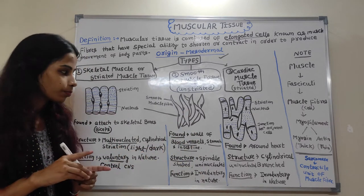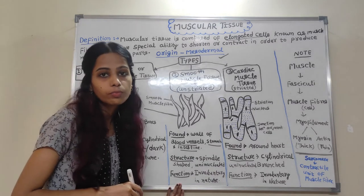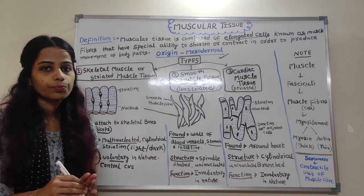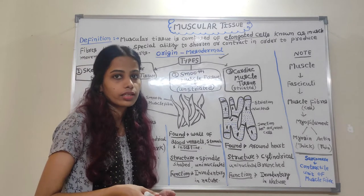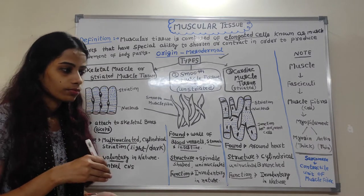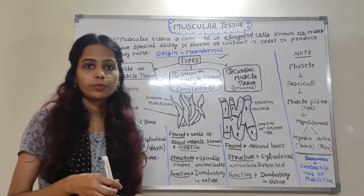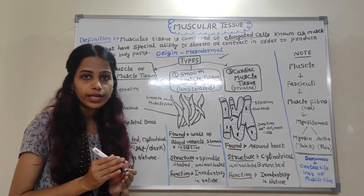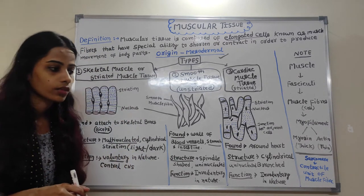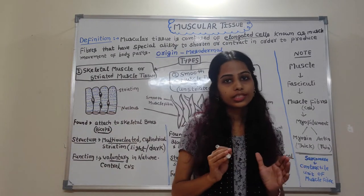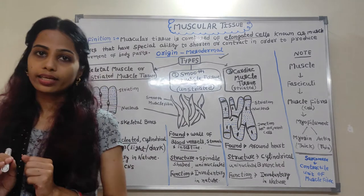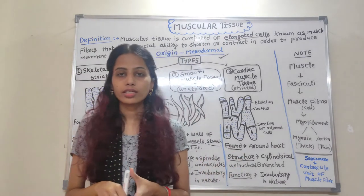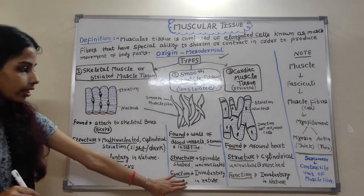The function of smooth muscle is involuntary in nature. For example, when the body eats something and food has to pass through the esophagus, contraction and relaxation movements happen — this is known as peristaltic movement. All functions of internal organs like digestion and respiration are not under our desire, so they are involuntary in nature.